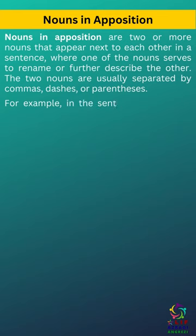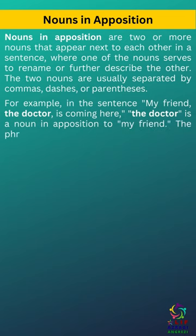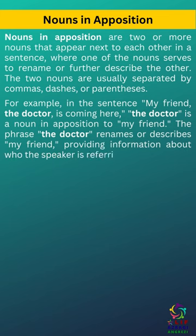For example, in the sentence 'my friend, the doctor, is coming here,' the doctor is a noun in apposition to my friend. The phrase 'the doctor' renames or describes my friend, providing information about who the speaker is referring to.